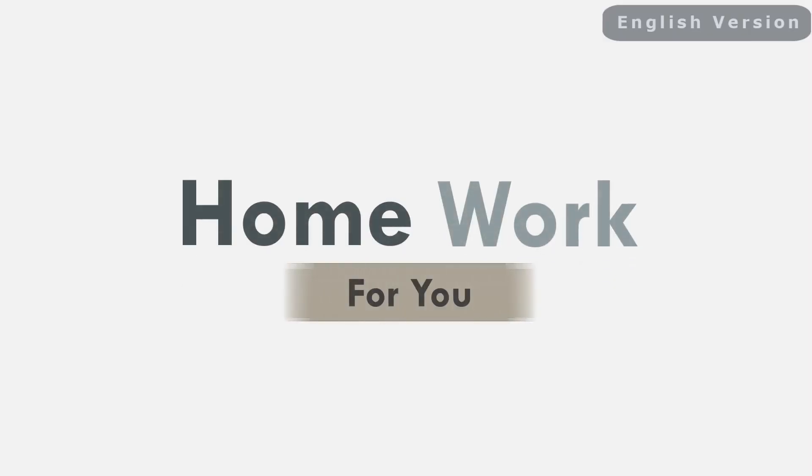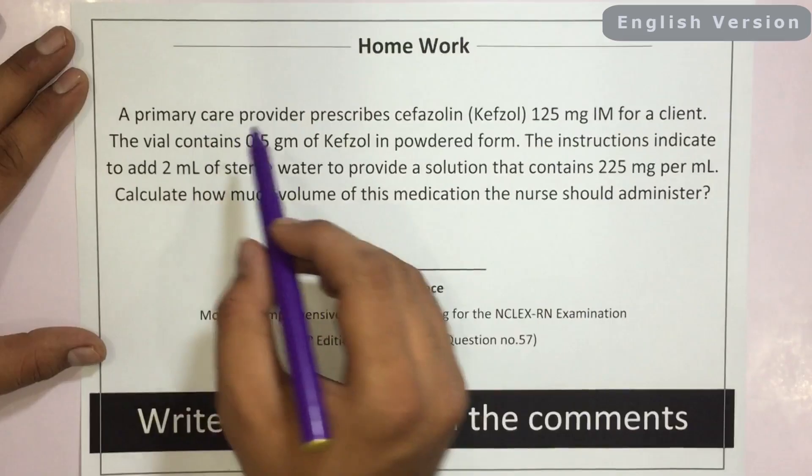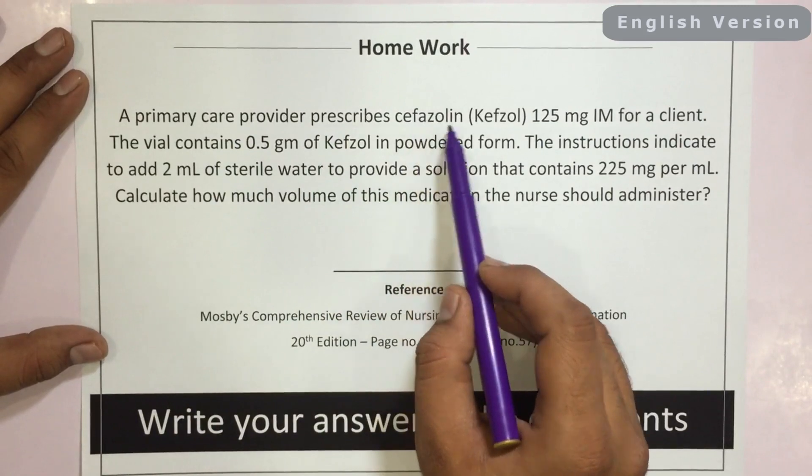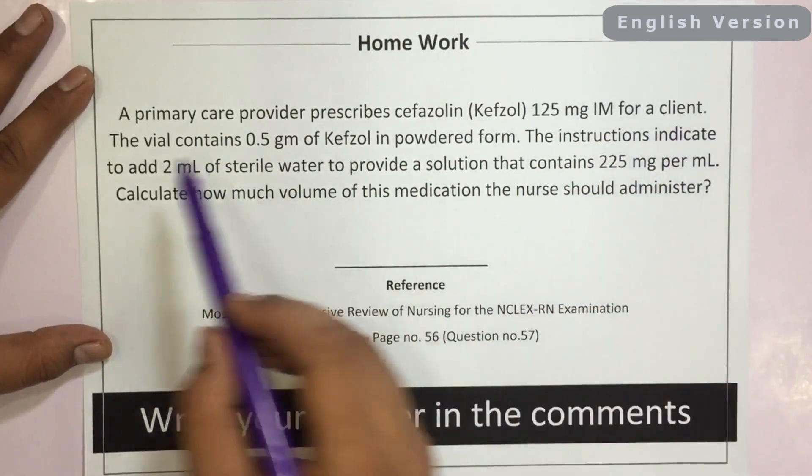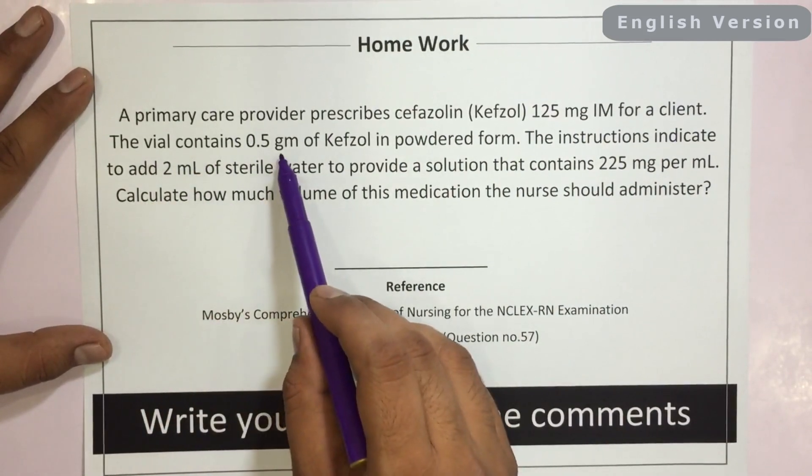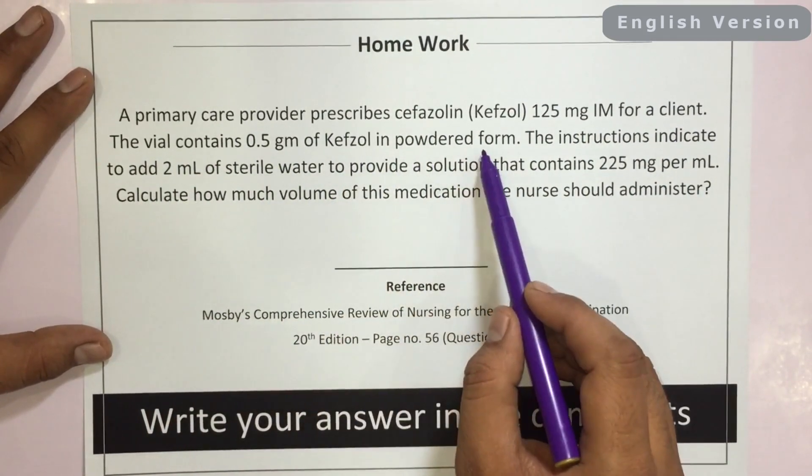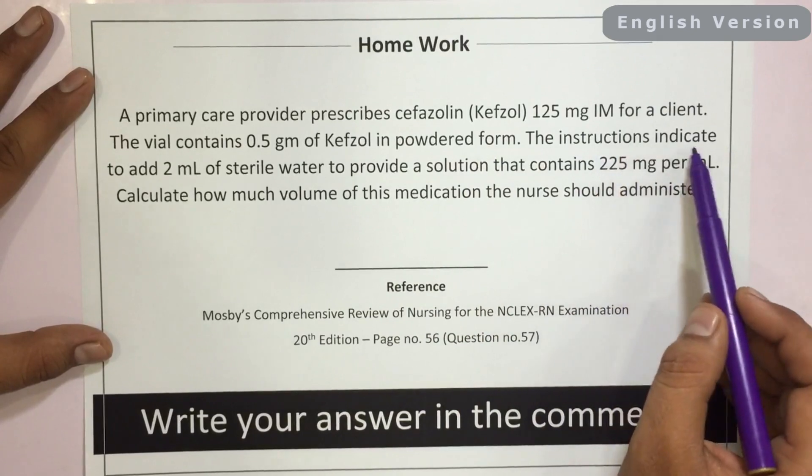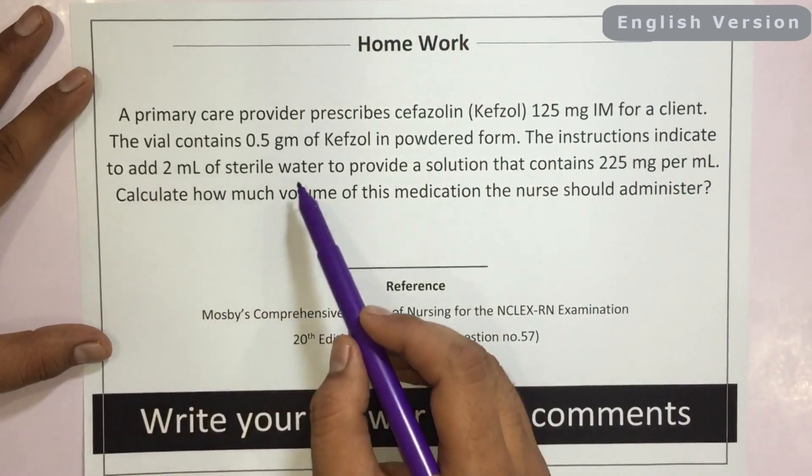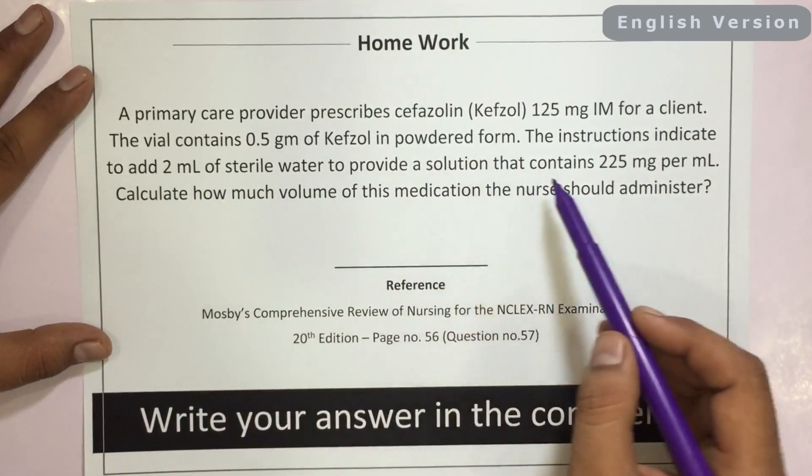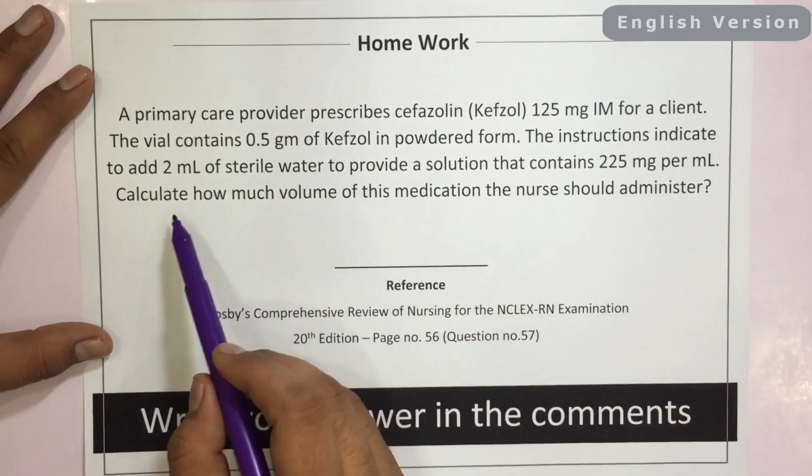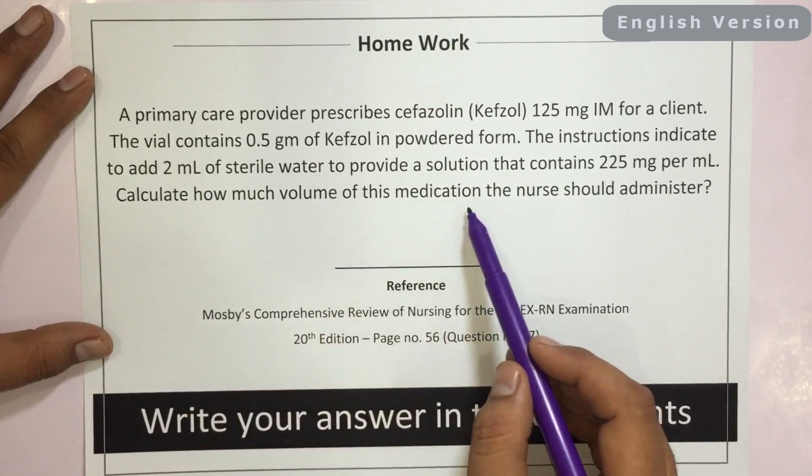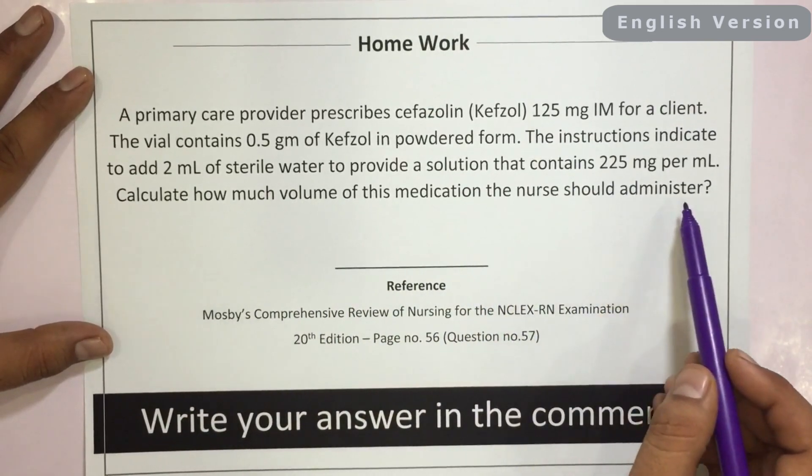Here is some homework for you. A primary care provider prescribes Cefazolin, 125 mg IM for a client. The vial contains 0.5 gram of Kefzol in powdered form. The instructions indicate to add 2 ml of sterile water to provide a solution that contains 225 mg per ml. Calculate how much volume of this medication the nurse should administer.